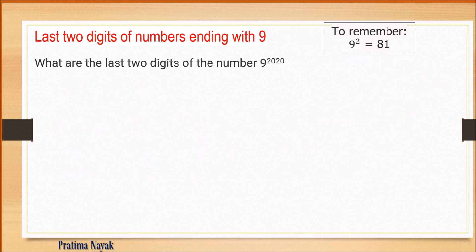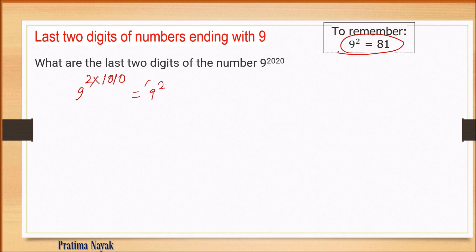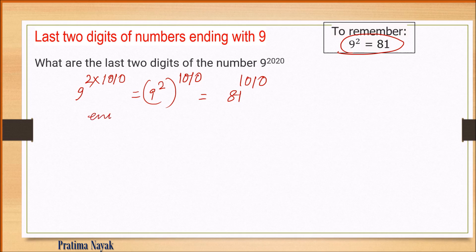Next: 9 to the power 2020. Since 9 squared is 81, write 9 to the power 2020 as (9 squared) to the power 1010, which is 81 to the power 1010. Since the unit digit is 1, the last digit is 1. The 10th place is 8 multiplied by 0 (unit digit of 1010) = 0. So 9 to the power 2020 ends in 01.